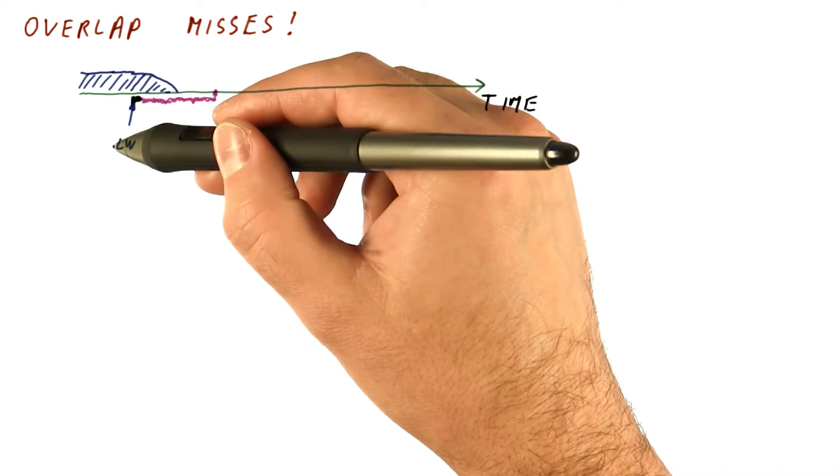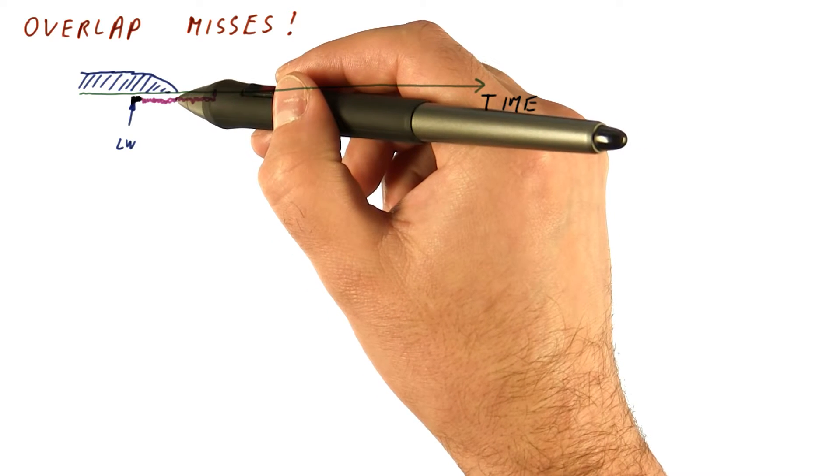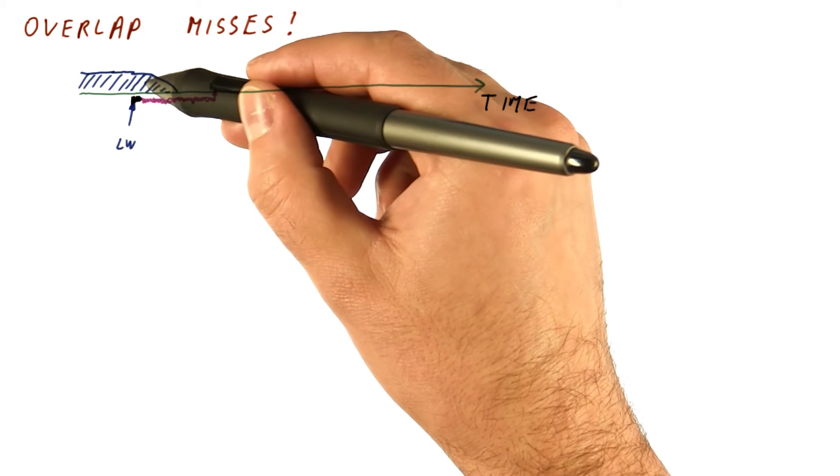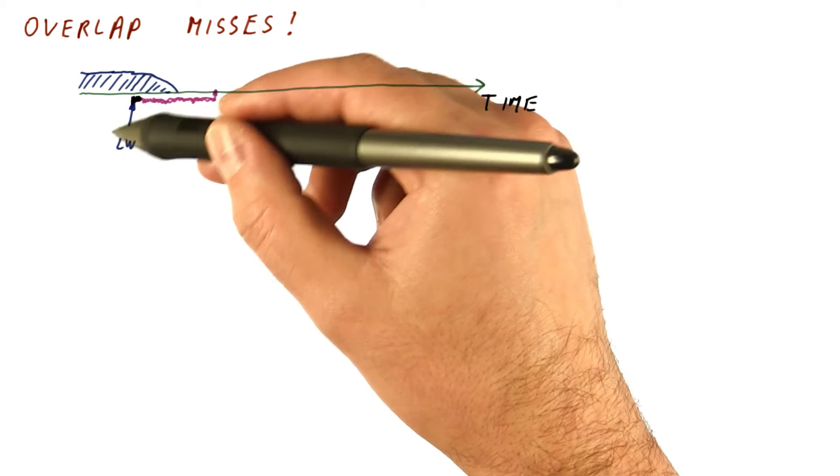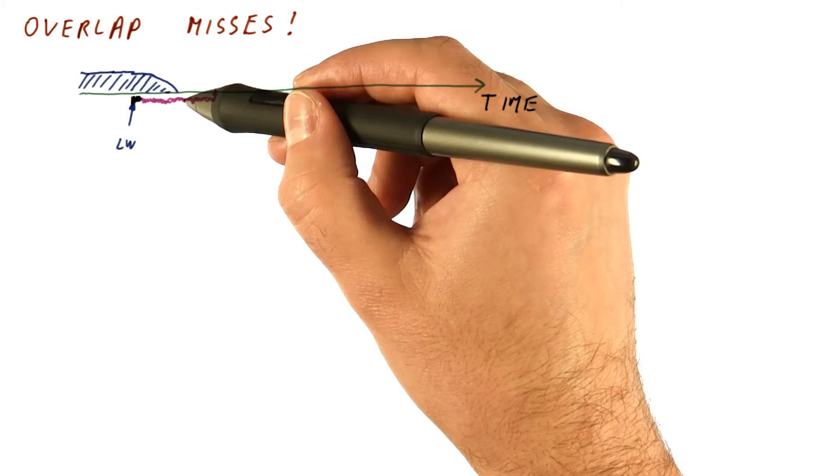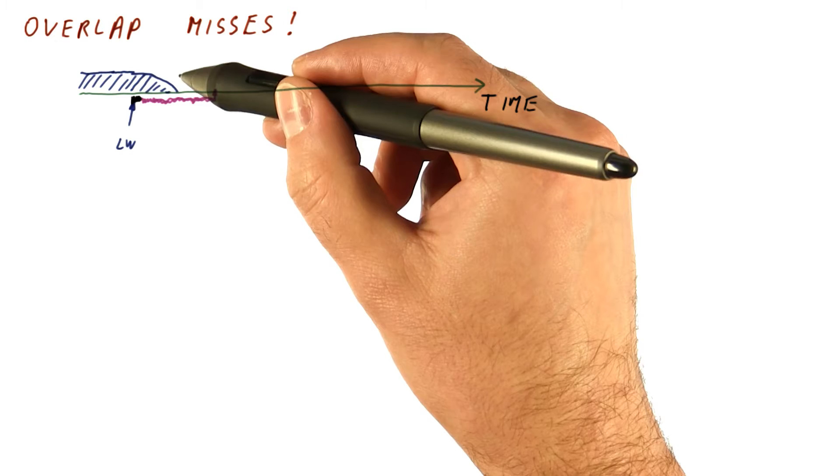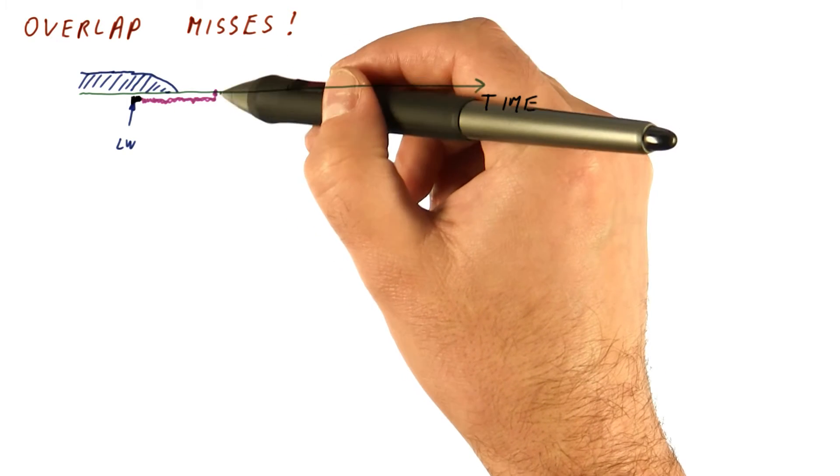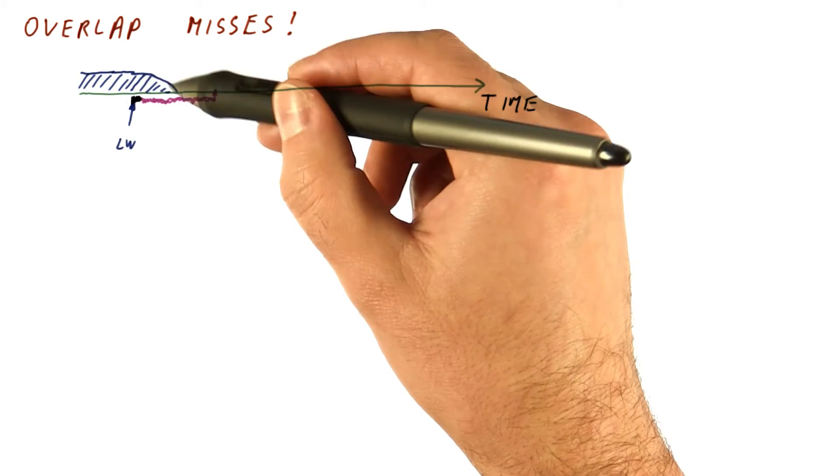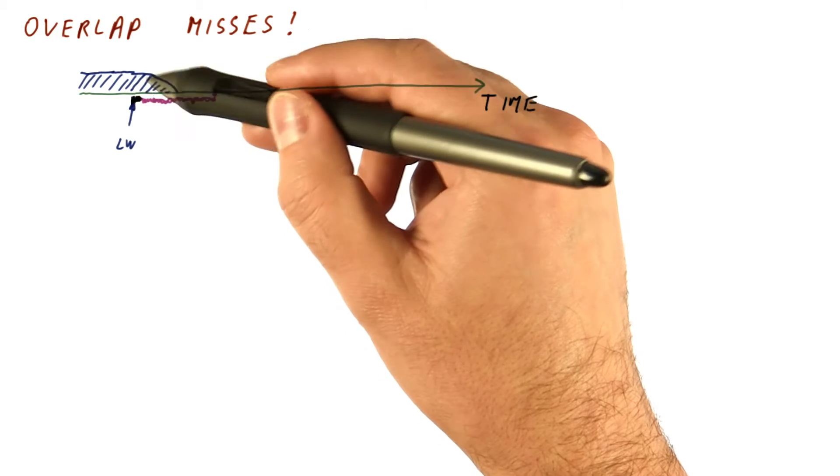Remember that it cannot commit this load. So eventually, for example, it will fill up the ROB. Or maybe even sooner than that, it will run out of reservation stations if a lot of things depend on this load. So some part of this miss latency is going to be directly added to the execution time. But some part of it is actually overlapping with the processor activity.